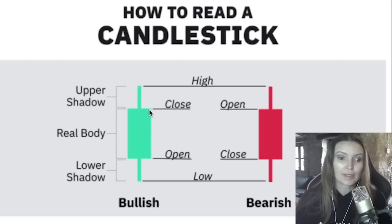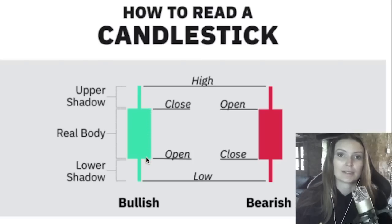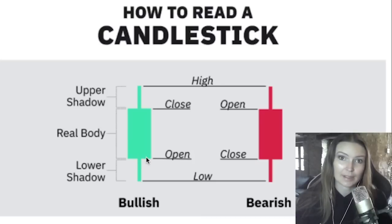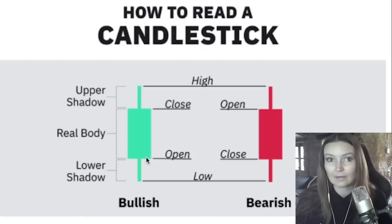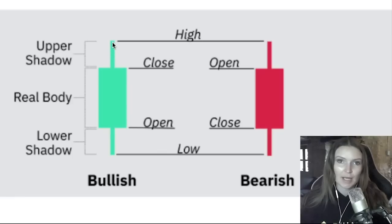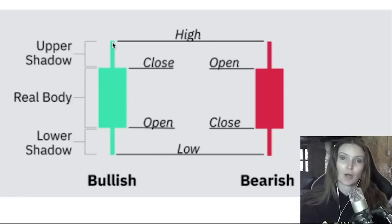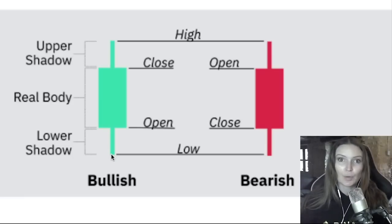The real body represents the time period, meaning the time frame the candlestick represents — for example, the last 15 minutes, the last hour, the last day, or the last month. The upper shadow represents the highest price of the time period, and the lower shadow represents the lowest price of the time period.